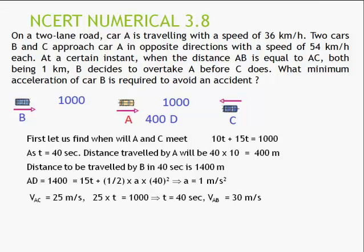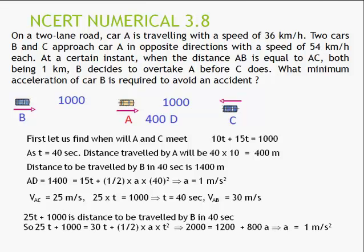If we apply the relative velocity concept: the relative distance B must cover is 25T + 1000. B travels this with initial relative velocity 30 m/s and acceleration a, so: 30T + ½aT² = 25T + 1000. Putting T = 40 seconds gives: 1200 + 800a = 1000 + 1000, which simplifies to a = 1 m/s². So your value is 1 m/s². The concept is straightforward — you can use either method.